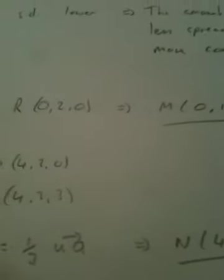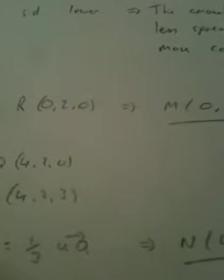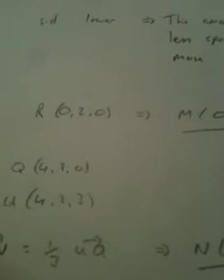Question 3 is a vector question that has a cuboid. We'll have the origin (0, 0, 0), and also point R which is (0, 2, 0): 0 in the X direction, 2 in the Y direction, 0 in the Z direction.